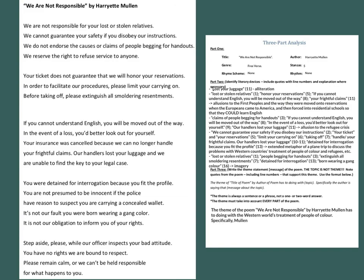The first time you use an author's name, you use the full first and last name. Every time after that, you just use the last name. So using these two graphic organizers — the four-quadrant analysis and the three-part analysis — is a fairly straightforward way of figuring out what's going on in a poem and coming up with a theme statement that, a little bit later on, we're going to be turning into a theme paragraph.